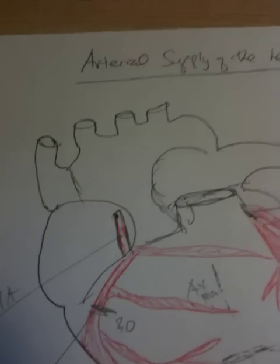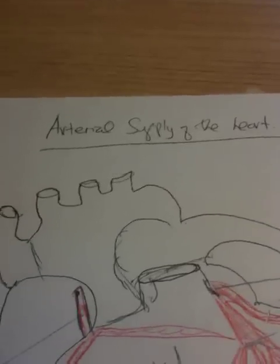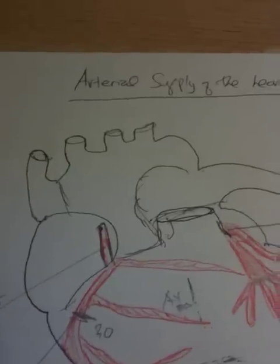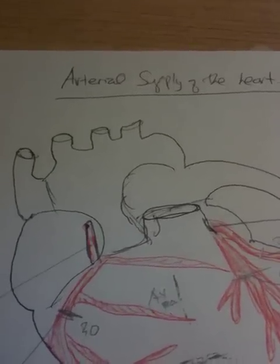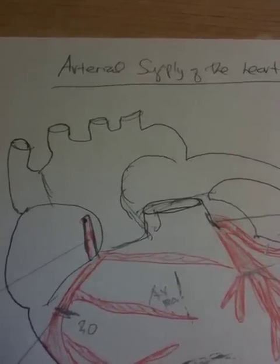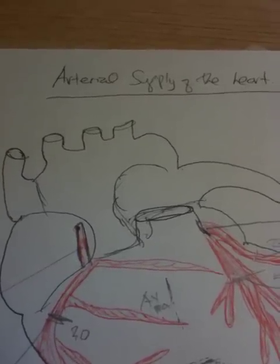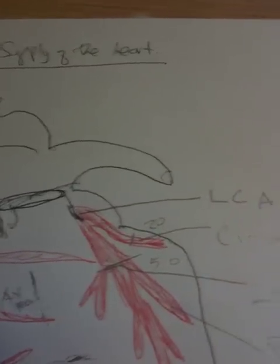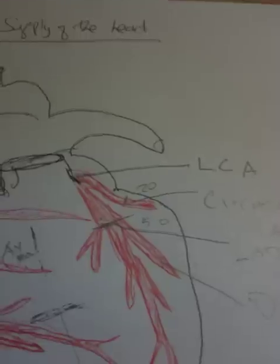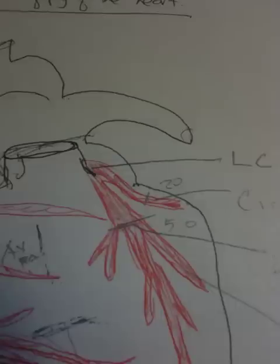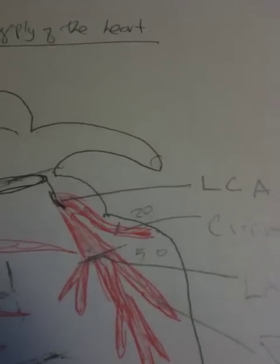Remember that the right coronary artery courses in the coronary sulcus and supplies the major parts of the right atrium and the right ventricle. The branches of the right coronary artery include the sinoatrial nodal artery, the atrioventricular nodal artery, and the posterior interventricular artery. The left coronary artery travels a short course between the left auricle and the ventricle and divides into two branches: the anterior interventricular — or left anterior descending artery — and the circumflex artery. That's basically the main blood supply to the heart.